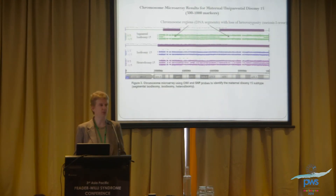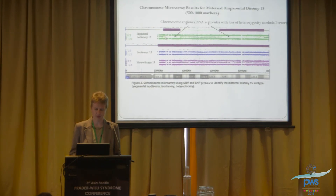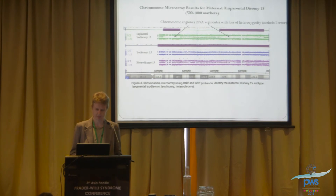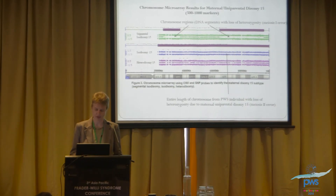Looking at microarray results for the three UPD subtypes: in segmental isodisomy you see three green rows — two from mom, one is the child — and the area that's missing is where you lose heterozygosity. In isodisomy, only two rows appear; you have identical chromosomes to the mother. And finally in heterodisomy, shown in pink, you have two separate chromosomes from the mother.